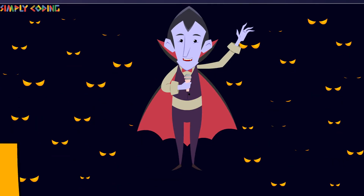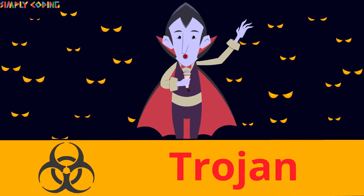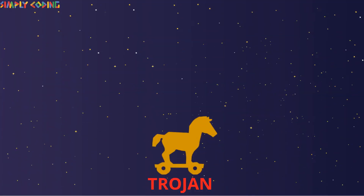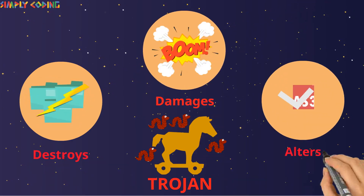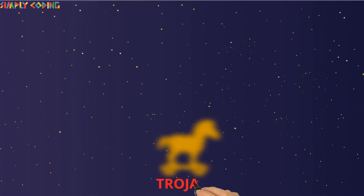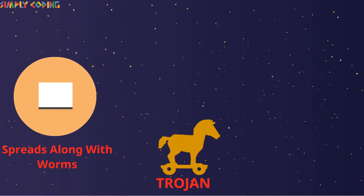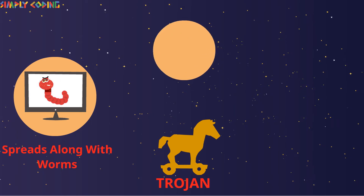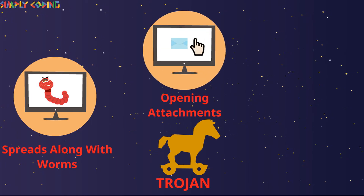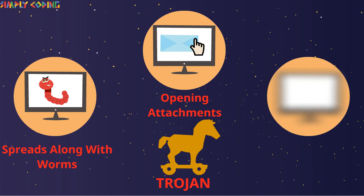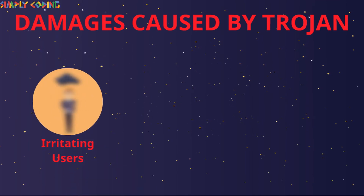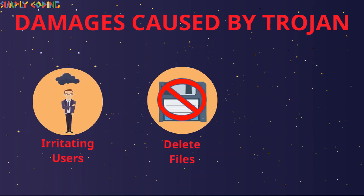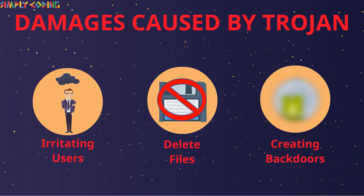A Trojan horse is a malicious program which misleads users of its true intent. It seems to function as a user expects, but in the background it actually destroys, damages or alters information. They do not self-replicate and so they are typically spread along with worms. Trojans are spread through the user's interactions such as opening an email attachment or downloading and running a file from the internet. Damages they cause vary from irritating the user to deleting files or creating backdoors to give malicious users access to the system.